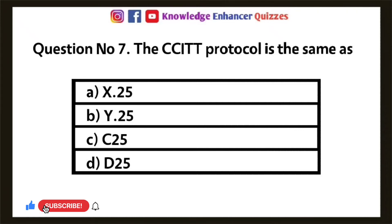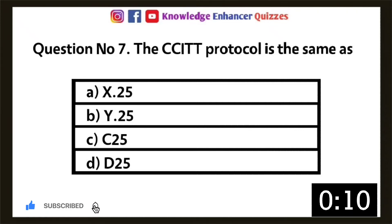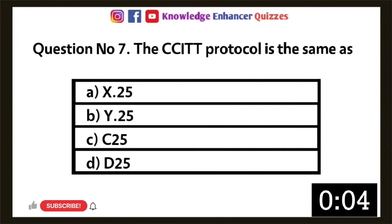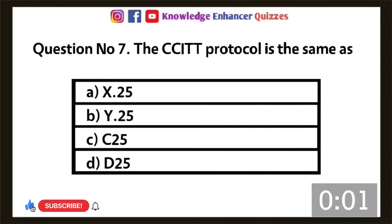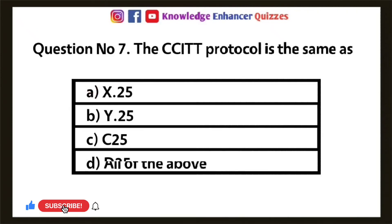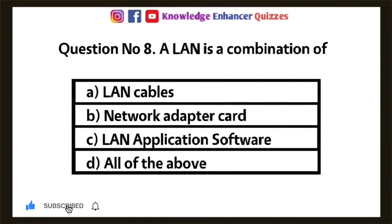Question 7: The CCITT protocol is the same as — Option A: X.25, Option B: Y.25, Option C: C.25, Option D: D.25. Option A is the right answer.